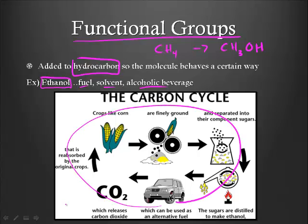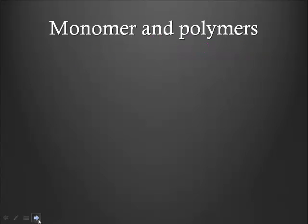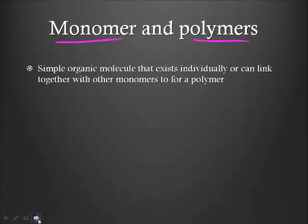So monomers and polymers - this is the most important part so far of our video. What a monomer is is just a simple organic molecule. When it's just by itself, we call it a monomer. But what it can do is it can bond or link together with other monomers to form a polymer. So let's look at a couple examples - these are the most important ones, these are the ones that we're gonna have to know.